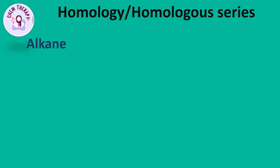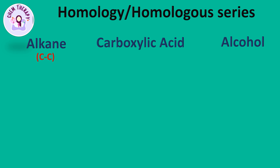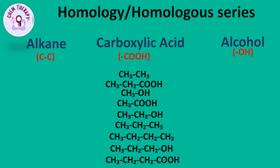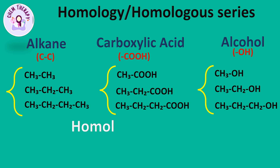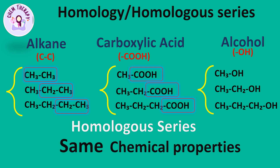Let's say we have different classes of organic compounds: alkanes, carboxylic acids, and alcohols. Alkanes contain carbon-carbon single bonds. The functional group in carboxylic acids is COOH, and in alcohols it is OH. Each of these classes contains a series of organic compounds known as a homologous series, as the word homologous means similarity in behavior. They show the same chemical behavior or properties due to the presence of the same functional groups.